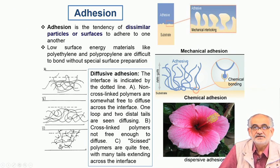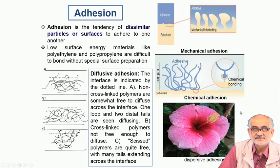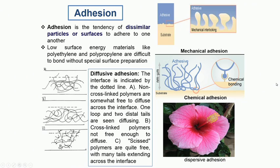There are examples in nature — for example, this flower is a bright example of how dispersive adhesion can happen because of the presence of certain chemicals at the tip of the bud, and that is how pollen can get attached to insects and subsequent biological phenomena can take place.